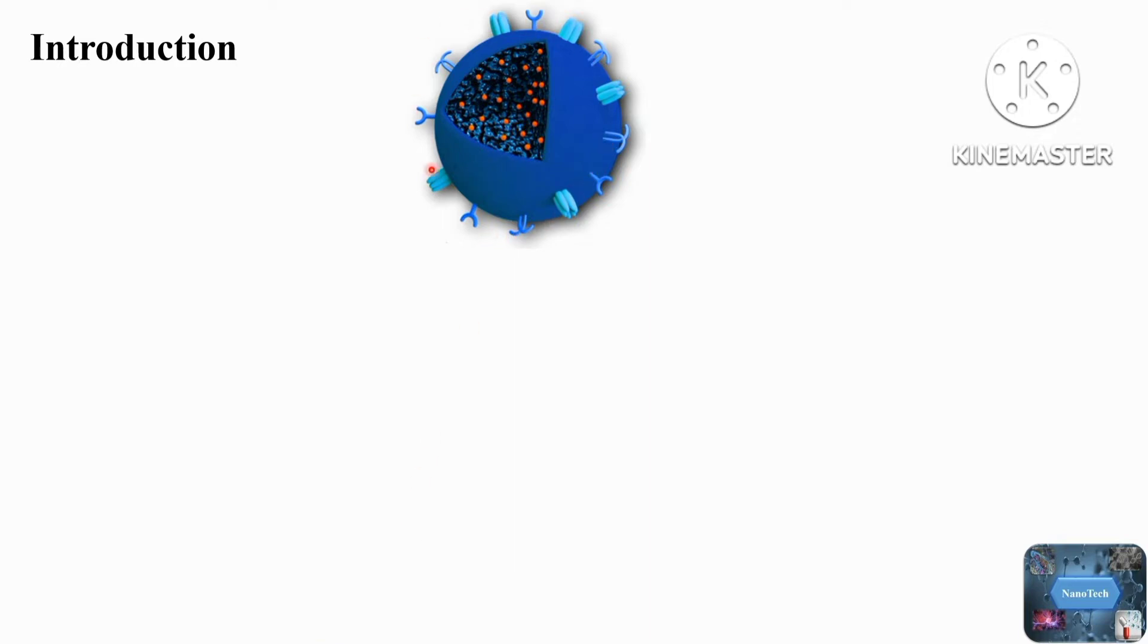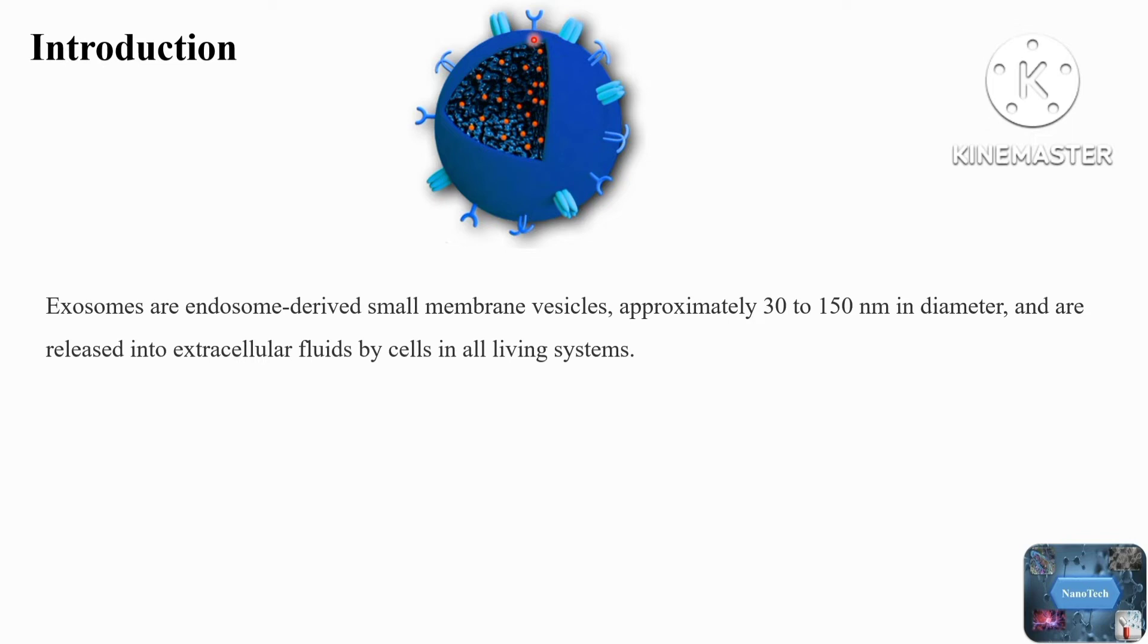to 150 nanometers. They are intraluminal vesicles formed by the inward budding of endosomal membranes during the maturation of multivesicular endosomes. Characterization of exosomes: Exosomes are derived from cell culture supernatants or plasma with their identification based on the